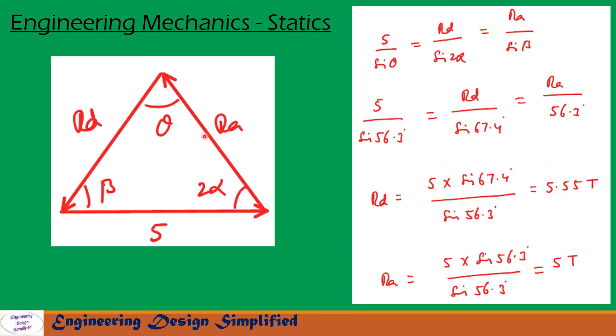Now, let us apply sine rule for this triangle. Sine rule is 5 by sine theta equal to RD by sine 2 alpha equal to RA by sine beta. That is written here. From first and second terms, we can find RD equal to 5 into sine 67.4 by sine 56.3. After simplification, we get RD, the tensile force in strut, equal to 5.55 ton.